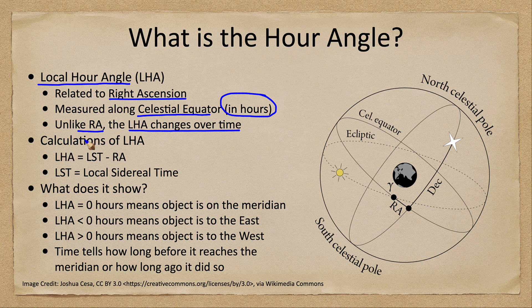How do we calculate the local hour angle? It is equal to what is called the local sidereal time, minus the right ascension. The local sidereal time is the time relative to the stars. The time we normally use here on Earth is solar time — we measure things relative to the Sun. It takes 24 hours for a star to return to the same position in solar time, but in sidereal time it takes 23 hours and 56 minutes, so the sidereal day is about four minutes shorter than the solar day.